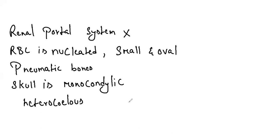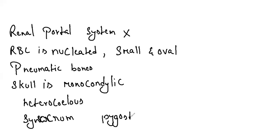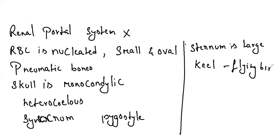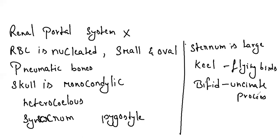Some posterior vertebrae are fused to form synsacrum, where the sacral bones are fused. The last few caudal vertebrae are fused to form a pygostyle. We have a large sternum called keel, which offers a joint plane for flight muscles and is highly developed in flying birds. Birds' ribs are bifid, and uncinate processes are present on the ribs. Exoskeleton is formed by soft feathers all over the body except the hind limbs.